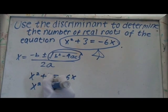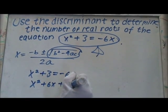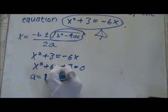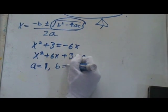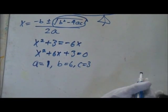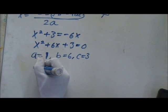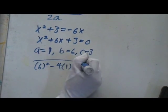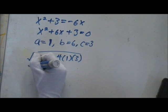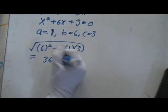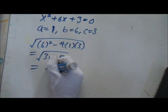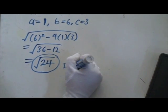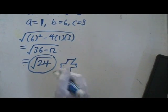And then, simplify. So, you first plug it in. The answer is the square root of 24. The square root of 24 is positive, which means you get two roots.